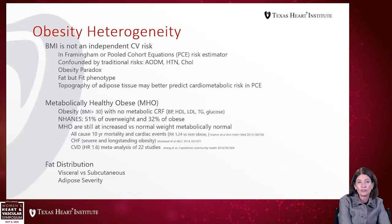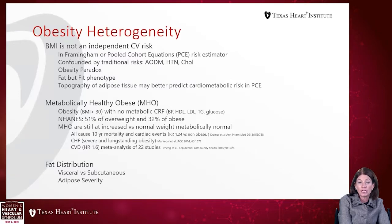The topography of adipose tissue — where it is deposited — has been postulated to be a better predictor of cardiometabolic risk. There is a term called the metabolically healthy obese, identified in large cohorts, where obesity at BMI over 30 is associated with no other metabolic risk — no high blood pressure, no low HDL, no elevated LDL, triglycerides, or glucose. In the NHANES database, 51% of overweight and 32% of obese individuals were considered metabolically healthy.